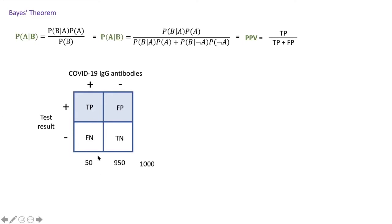And then if we know 50 of the people actually have the antibodies, we can say that 950 people do not have the antibodies.